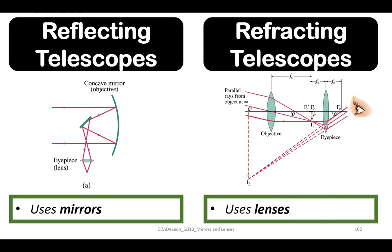Reflecting telescopes use mirrors, while refracting telescopes use lenses.